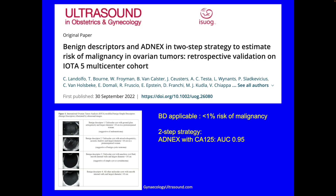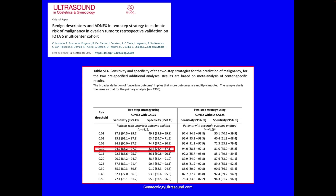The two-step strategy was published in 2022. It states that if the benign descriptors are applicable, there's less than 1% risk of malignancy. If they're not applicable, use the ADNEX score with CA125 for a very good test. Using a 10% risk threshold, the sensitivity of diagnosing ovarian cancer is 94%, with some over-calling of benign lesions as malignant. If you go up to a 25% cutoff, you will diagnose fewer ovarian cancers but describe more benign lesions correctly. There's always a trade-off, so we use 10%.